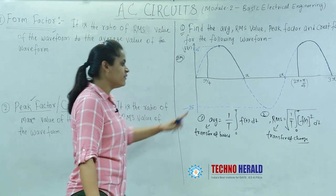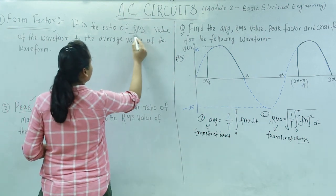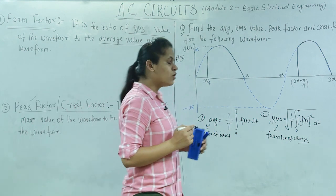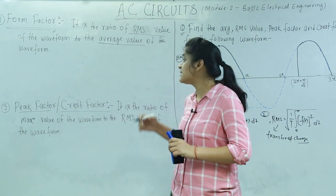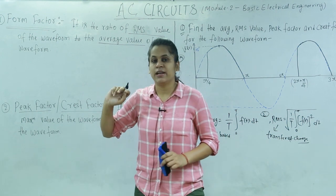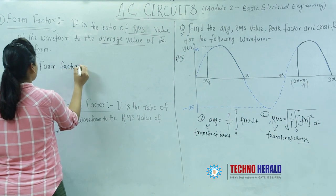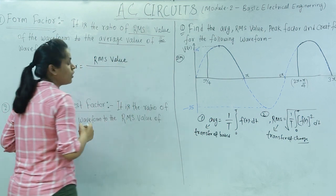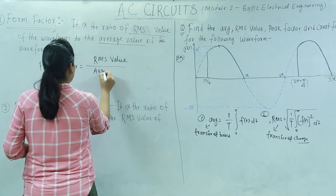So let us go for the definition of form factor first. We will study these two factors, then we will solve this problem. Form factor is defined as the ratio of RMS value to the average value of the given waveform. So form factor is equal to RMS value divided by average value. You have to just remember this — this definition is enough for your examination.